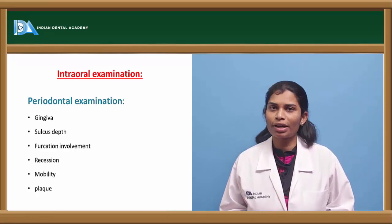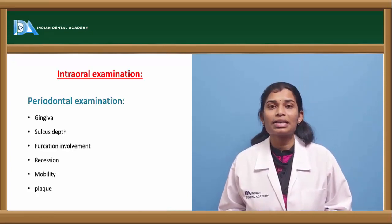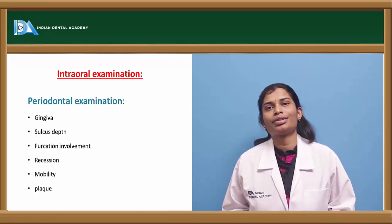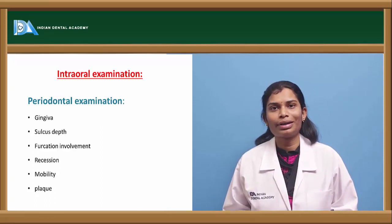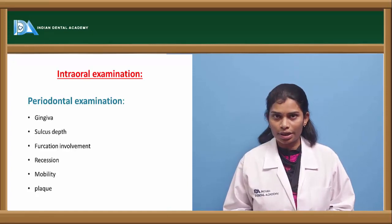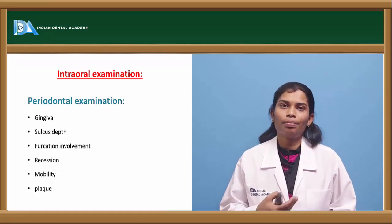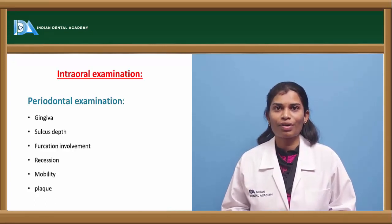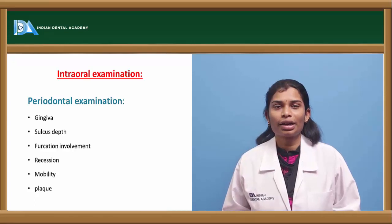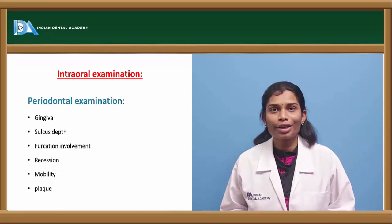Coming to furcation involvements — if any are observed, assess why they occurred: overloading of the tooth or periodontal disease causing bone loss. Coming to recession — recession happens hand in hand with furcation involvement; as the gum recedes, furcation involvement may eventually occur. Record recession in relation to both lingual and buccal surfaces for each tooth.